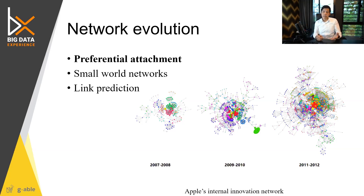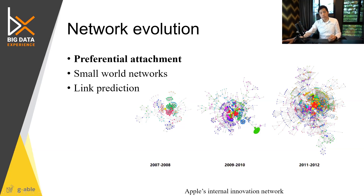Understanding these two properties allows us to understand why the evolution or changing network occurring — like the Apple internal innovation network — changed from this structure into this structure. You will see that these changes have properties obeying these two types of laws and properties.